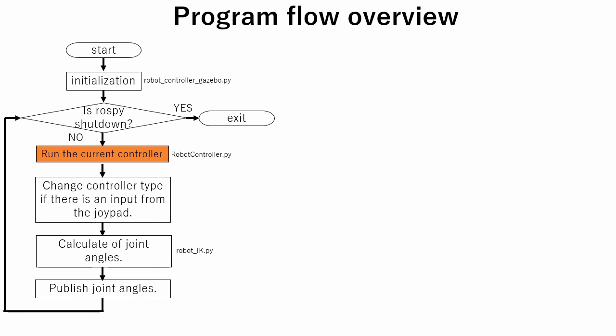This robot has three operation modes: crawl, trot and stand. Depending on in which operation mode the robot is, an appropriate controller is selected. A controller sets the sequence of leg movement. Robot state can be changed using joypad.